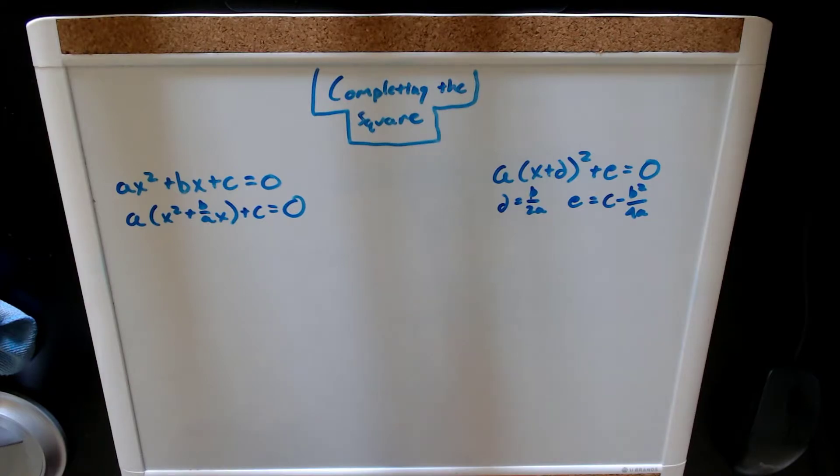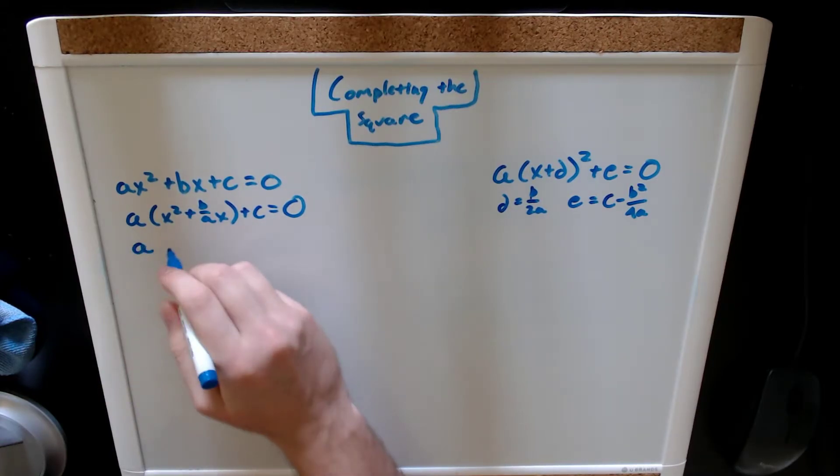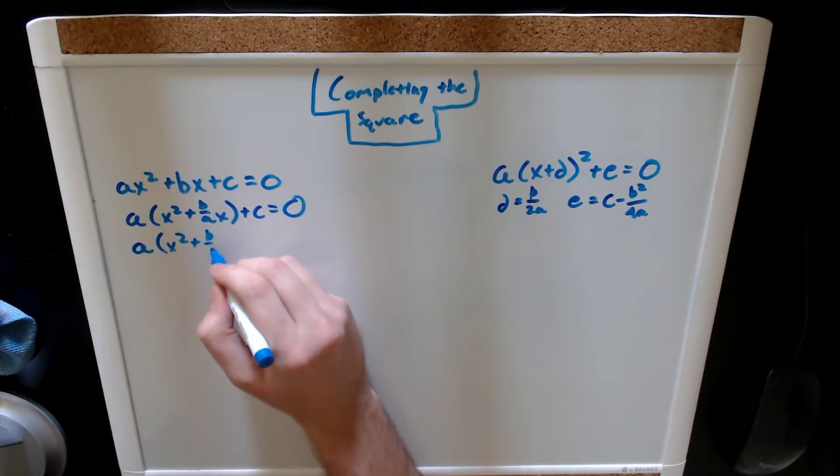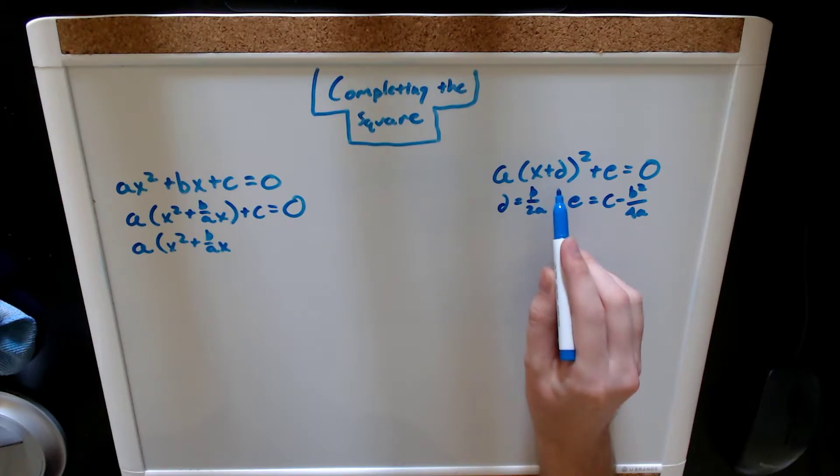Our next step is going to be focusing on the parentheses, what's going on inside the parentheses, and making a perfect square out of it. So, if we have our a, x squared plus b over a x, now we need our c value as something that will complete the square so that we can take the square root of it and make it look like this.